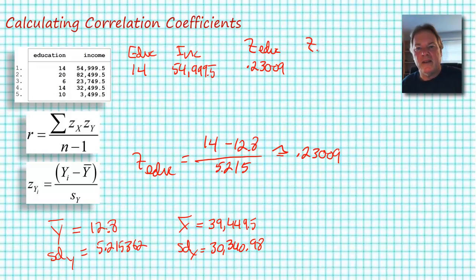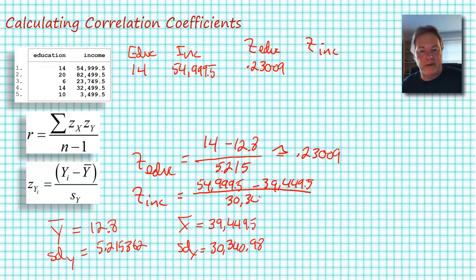Now I need to calculate the z-score for income and again I'll come down here. My income score will be 54,999.5 minus 39,449.5 divided by the standard deviation of income, which is 30,340.98. Doing that calculation I get approximately 0.51251 and I can put the next number into my table.